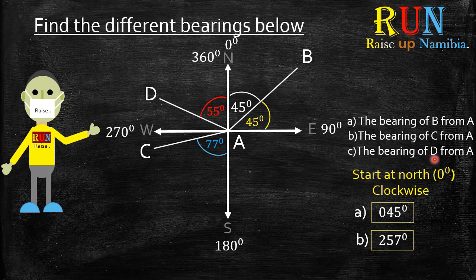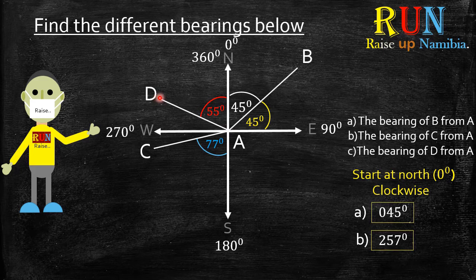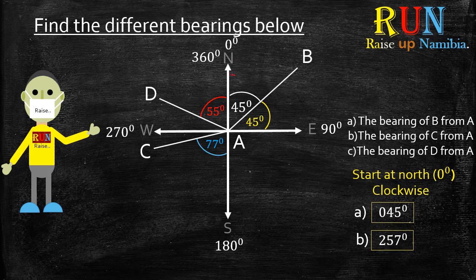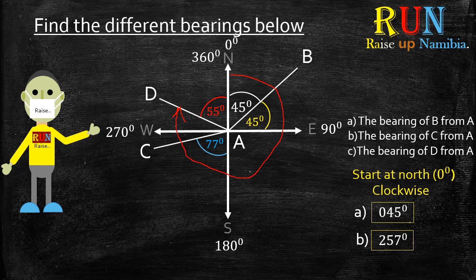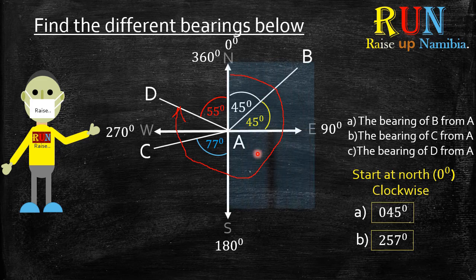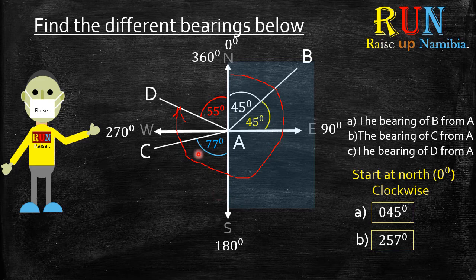Back to the lesson. Now C says the bearing of D from A. So A we know is in the center. Where is D? D is over here. Now we always start where? At our grade zero, which is our north. And we move in a clockwise motion towards the D. Where is D? D is over here. Now we know already this is 90 degrees plus another 90 degree. That is 180, it's a straight line. And then here that will give us 270.